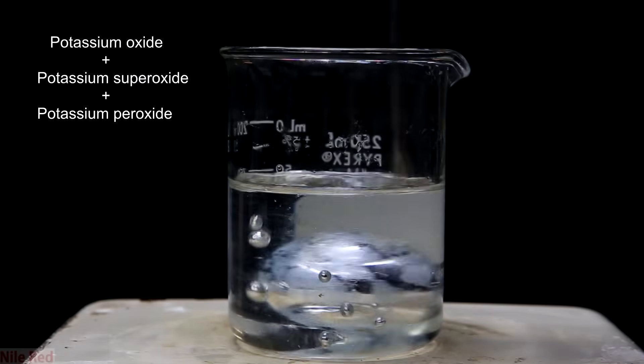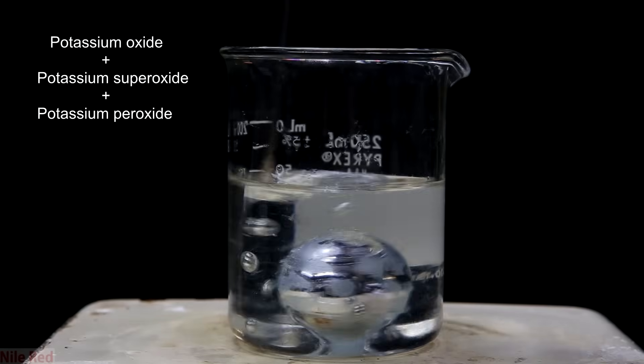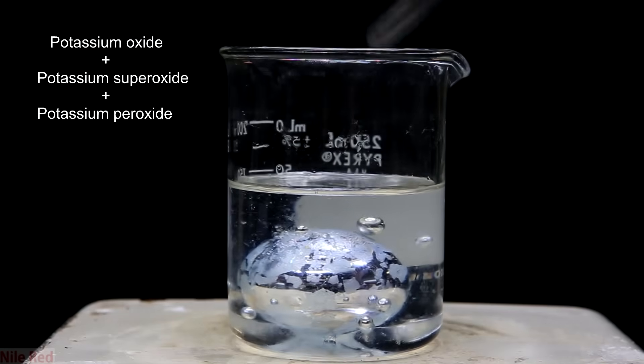Like sodium, potassium forms a few different oxides, namely potassium oxide, potassium superoxide, and potassium peroxide.